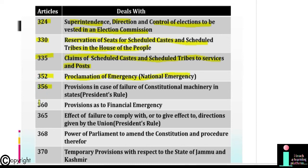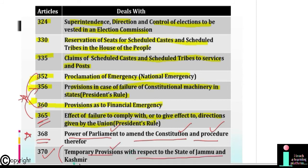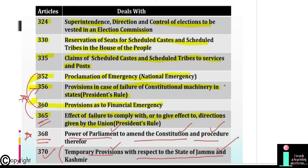Article 335: Claims of Scheduled Castes and Scheduled Tribes to services and posts. Article 352: Proclamation of Emergency, that is, National Emergency. Article 356: Provisions in case of failure of constitutional machinery in states, that is, President's Rule. Article 360: Provisions as to Financial Emergency. Article 365: Effect of failure to comply with or to give effect to directions given by the Union — President's Rule can be implied under this article. Article 368: Power of Parliament to amend the Constitution and procedure thereof. Article 370: Temporary provisions with respect to the state of Jammu and Kashmir.